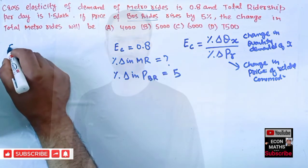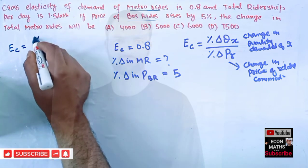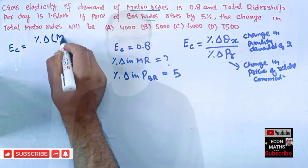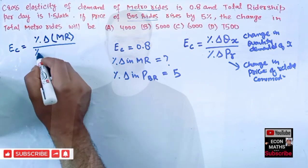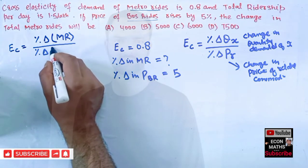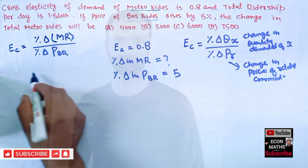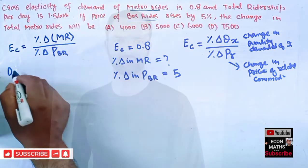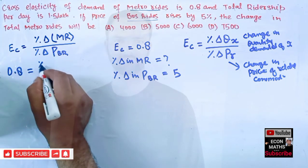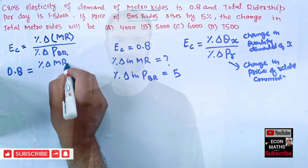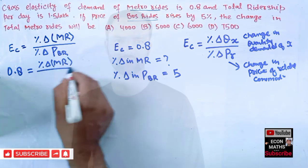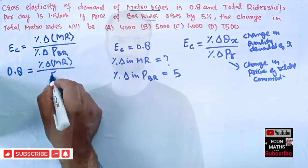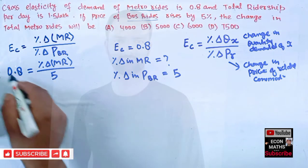So writing the formula again: cross price elasticity of demand equals percentage change in metro riders divided by percentage change in price of bus riders. This equals 0.8. So 0.8 equals percentage change in metro riders divided by 5%.